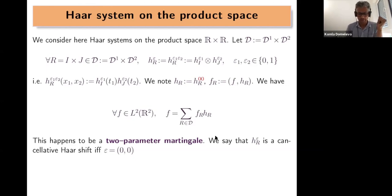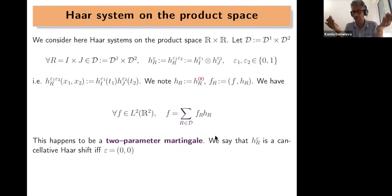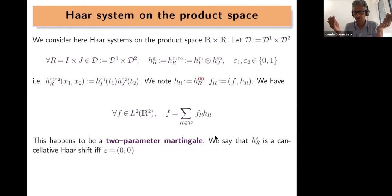I insist on this martingale language because the H1-BMO duality, when written with stochastic language, is the same whether we are dealing with a one-parameter martingale — problems on the disk — or a two-parameter martingale — problems on the product space, the bi-disc, or any number of parameters.